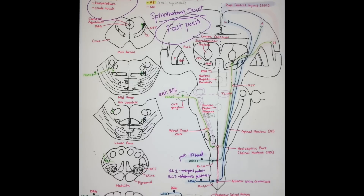So to start, like before for your dorsal column, you have your upper body and your lower body. Let's pretend you're in the leg: mechanoreceptors from your leg synapse at Rexed lamina 1 and Rexed lamina 2. Rexed lamina 1 is your marginal nucleus; Rexed lamina 2 is substantia gelatinosa. Then it crosses midline at your anterior white commissure, travels up your spinothalamic tract, synapses at your ventroposterolateral nucleus of the thalamus, or your VPL, travels through your PLIC, and then eventually synapses at your postcentral gyrus.